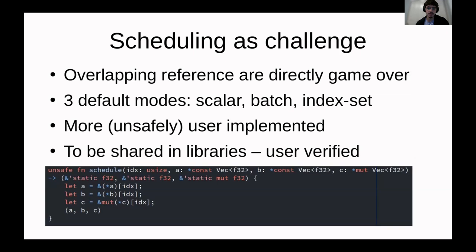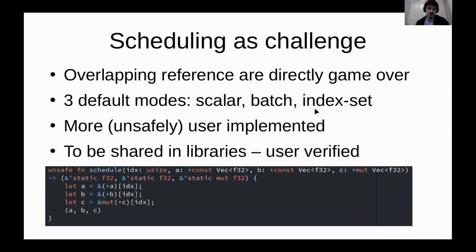For the scheduling, the three default modes I'm going to implement as part of the standard library are: scalar, which I've shown here; batching, where instead of a single index we just take a chunk; and index set, where for operations that aren't completely sequential — like in a sparse matrix where you have one element in row one, three in the following row, and one in the lowest row — we have a set of ranges. This concept of scalar, batching, and index set is taken from Raja, so it's not completely new, but we hopefully have some nice abstractions.